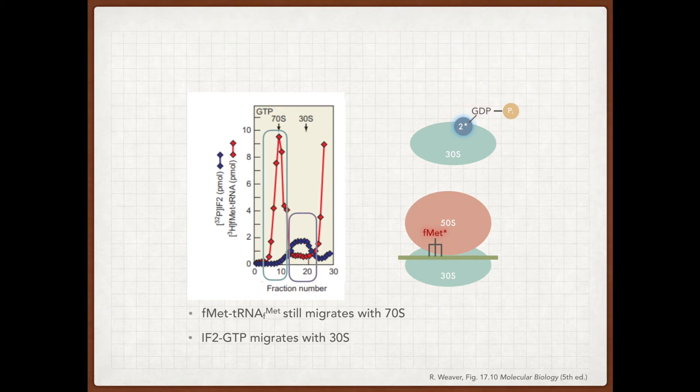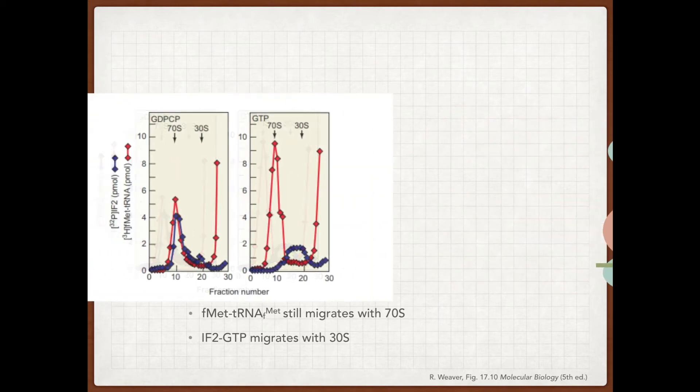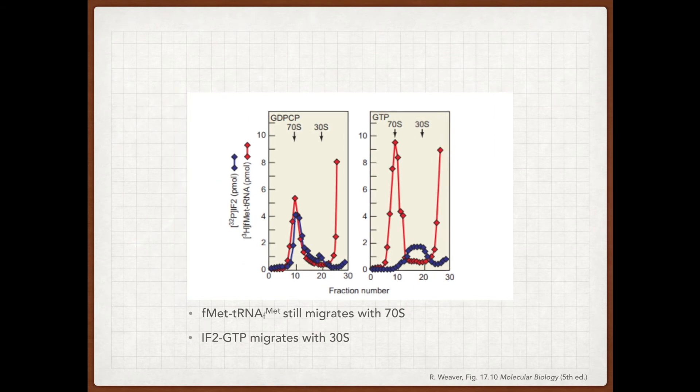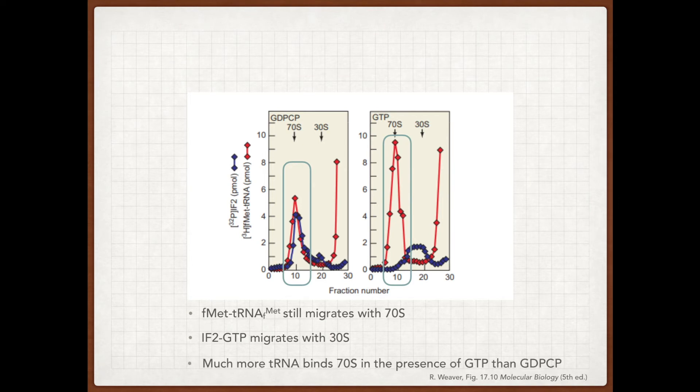But there's still more data that we can get if we compare the two graphs side by side. And if we look at the peaks around 70S, we could see that in the presence of GTP, much more FMET-tRNA-FMET is binding to the 70S than in the presence of GDPCP. So what's the implications of this?